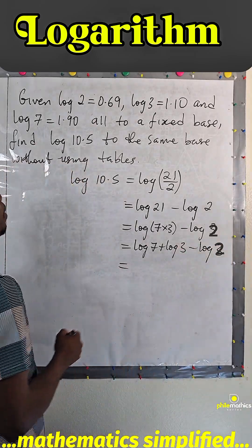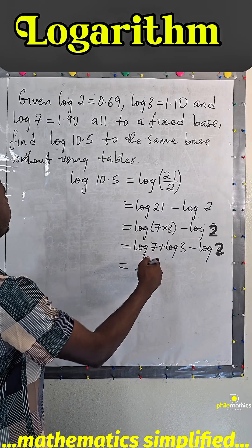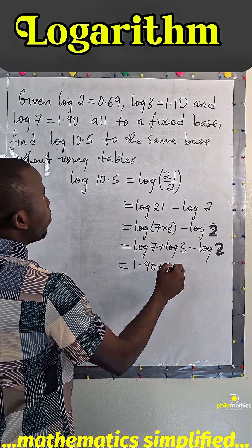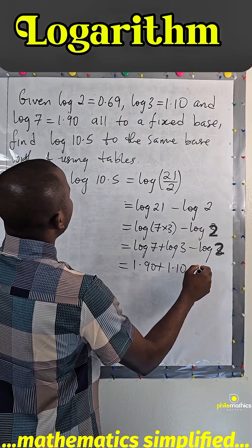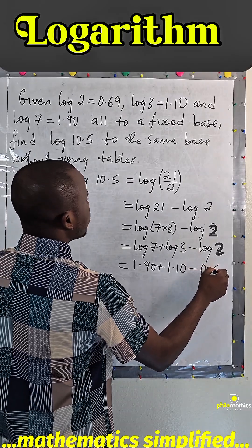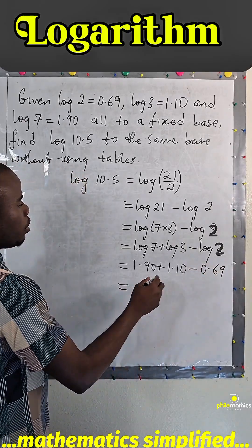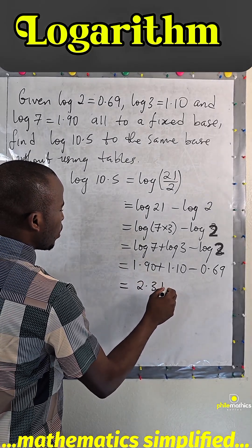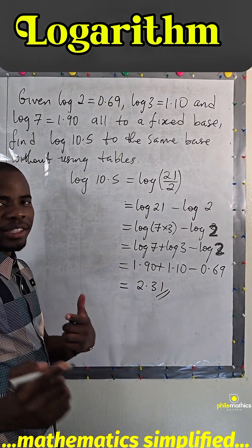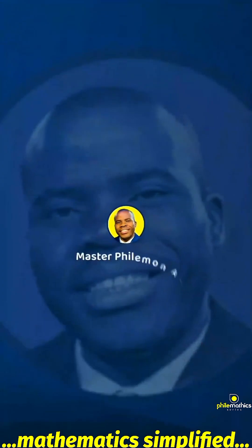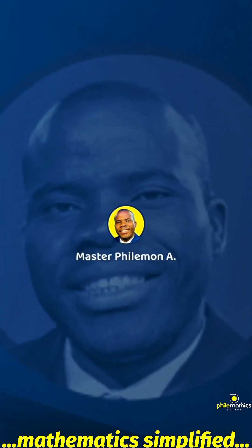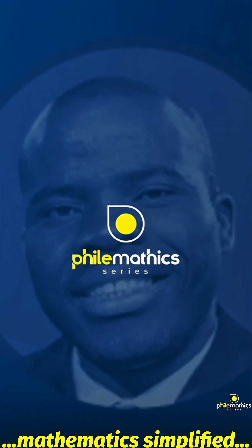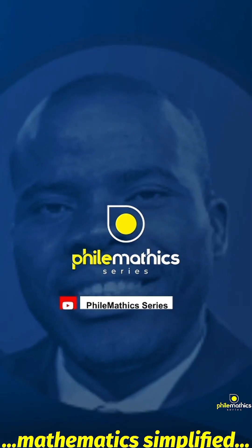Now we can do our math. Log 7 is 1.90, log 3 is 1.10, and log 2 is 0.69. If we simplify this, we get 1.90 plus 1.10 minus 0.69, which gives us 2.31.